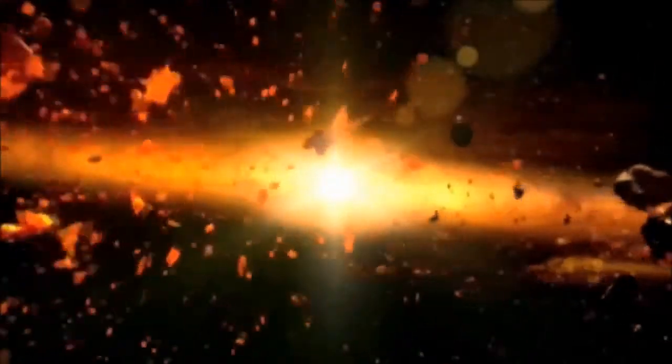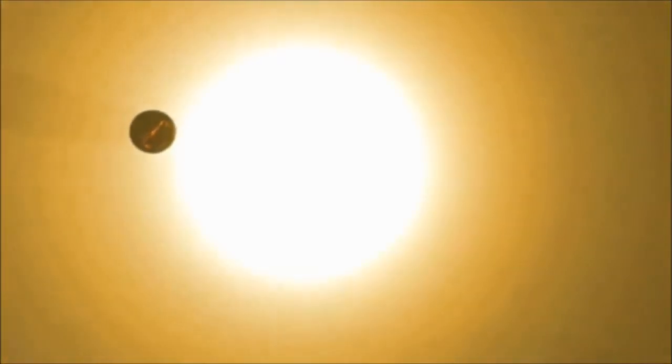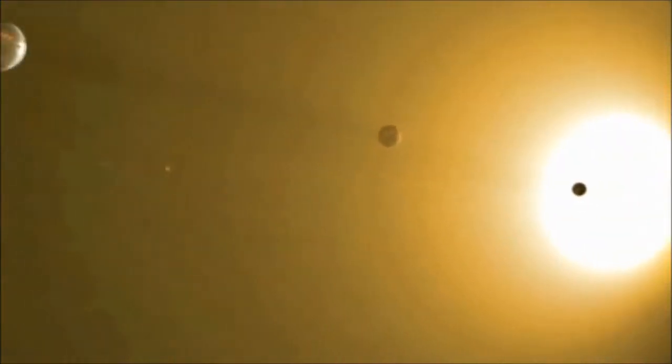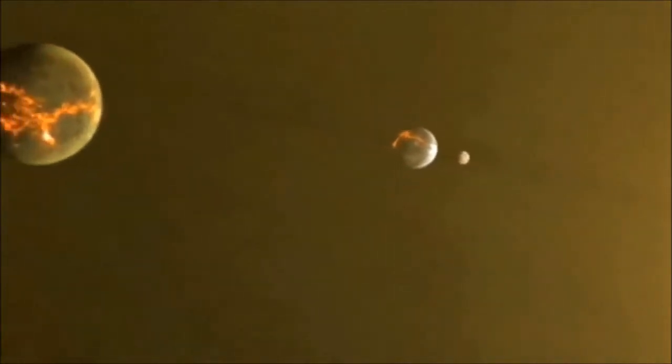What was once a star surrounded by dust and gas is now a star with orbiting planetoids, resembling a solar system. However, these young planetoids have not yet been set into their orbital paths because collisions are still taking place within the system.